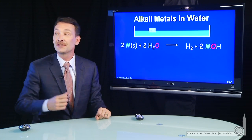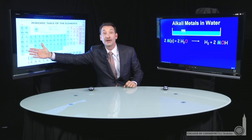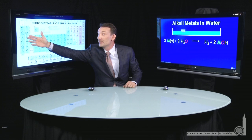Now, the alkali metals are the metals of column one of the periodic table: lithium, sodium, potassium, rubidium.